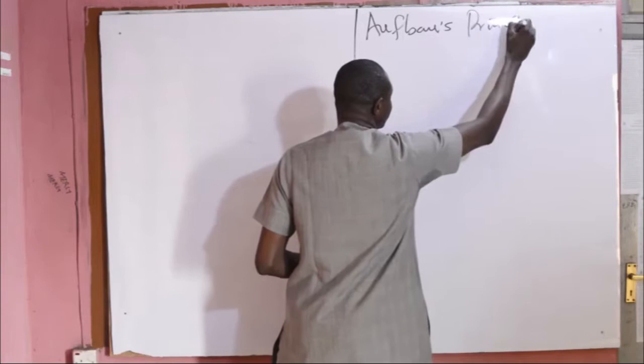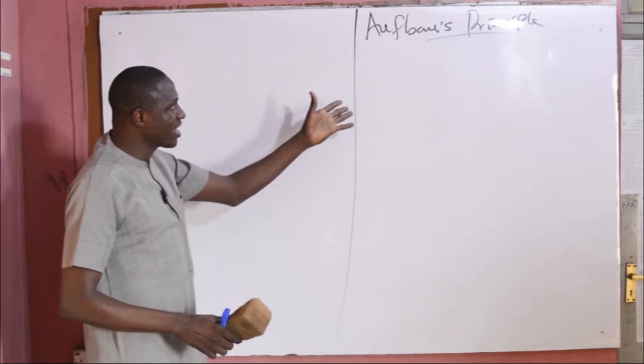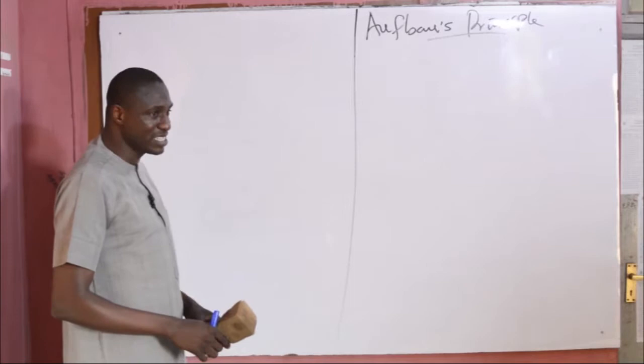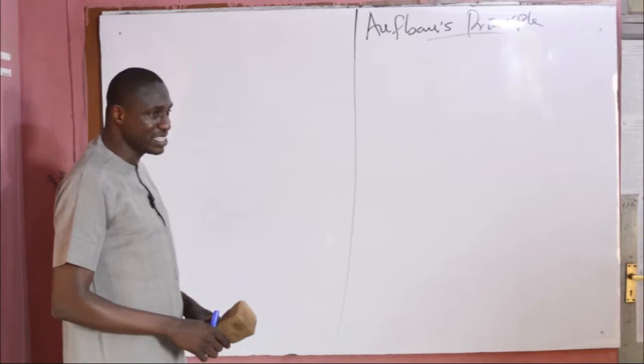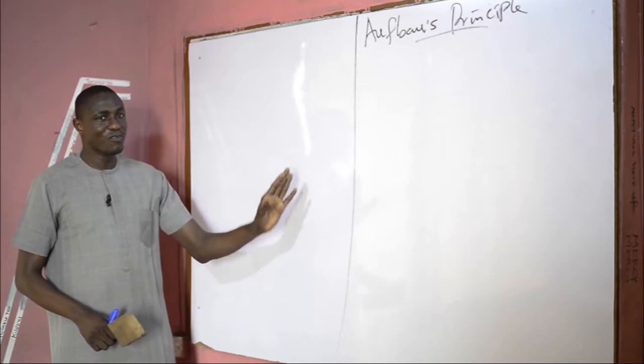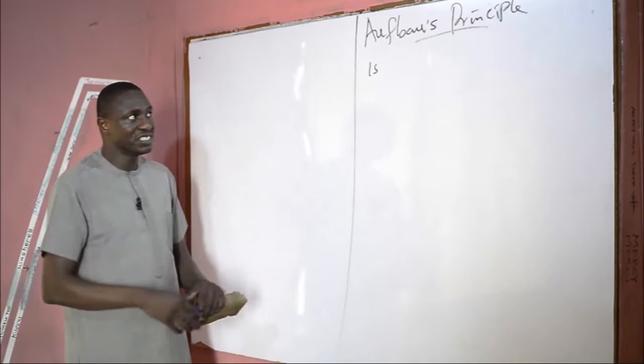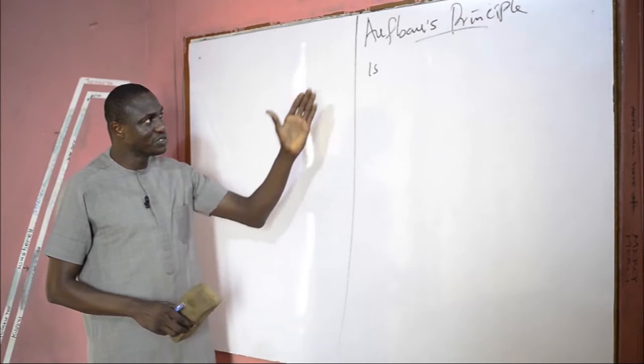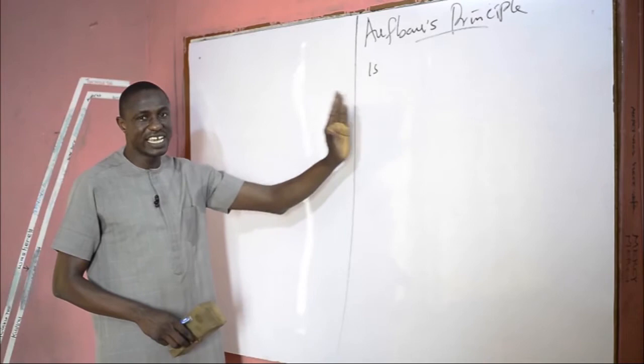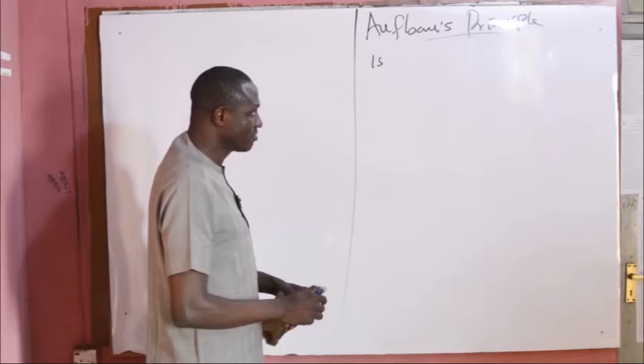The Aufbau principle states that in the ground state of an atom or ion, when writing the electronic configuration, electrons enter each orbital starting with the orbital of the lowest energy level, which is 1s, before entering orbitals of higher energy levels. That means when you want to write the electronic configuration of an atom or ion in the ground state, you have to start based on the energy level of the orbitals.